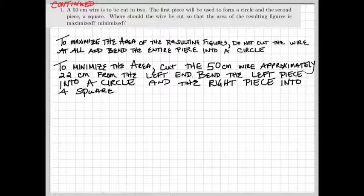The final step now is to make sure to have a complete sentence that answers the question as your conclusion. My conclusion, to maximize the area of the resulting figures, do not cut the wire at all and bend the entire piece into a circle. To minimize the area, cut the 50 centimeter wire approximately 22 centimeters from the left, bend the left piece into a circle, and the right piece into a square.